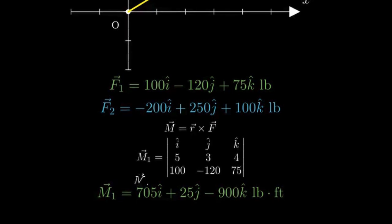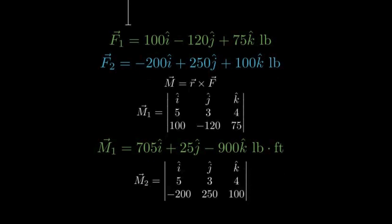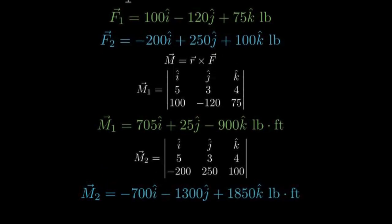Similarly for F2, we use the same position vector, but with F2's components: negative 200, 250, and 100. This gives us M2 equals negative 700i minus 1300j plus 1850k pound-feet.